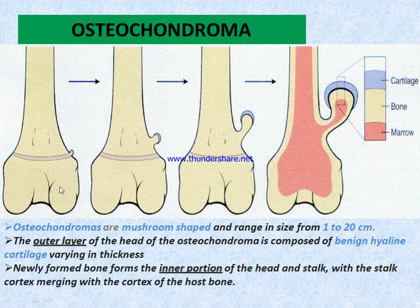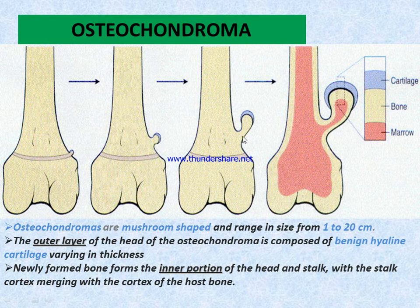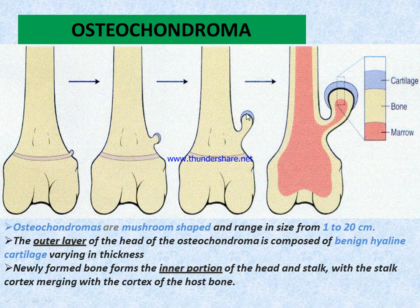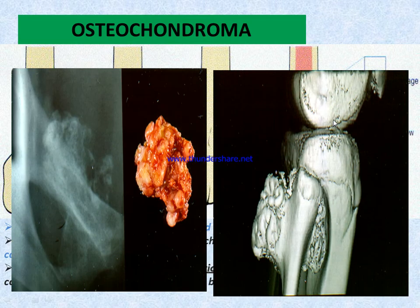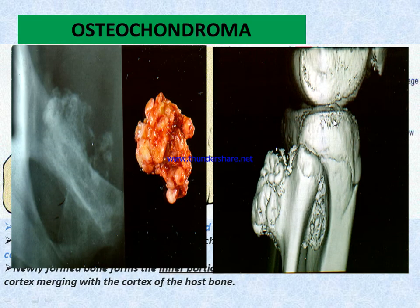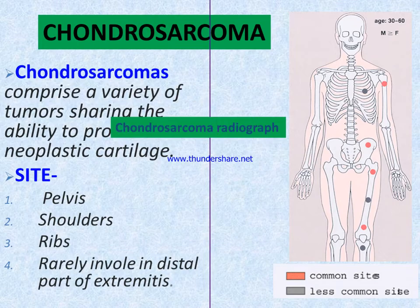Here are images of osteochondroma showing its mushroom shape. The blue portion shows cartilage, the yellow portion shows bone, and another portion shows bone marrow.